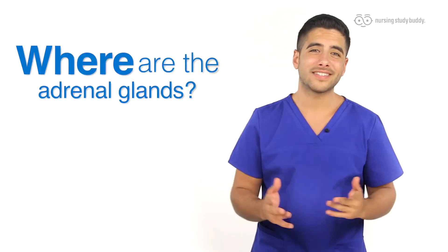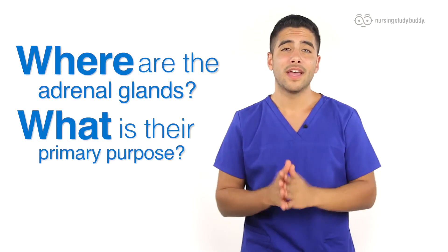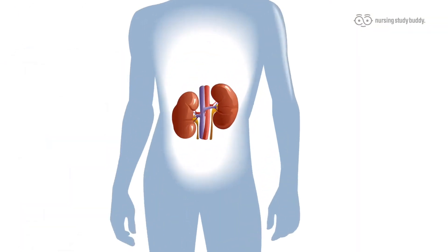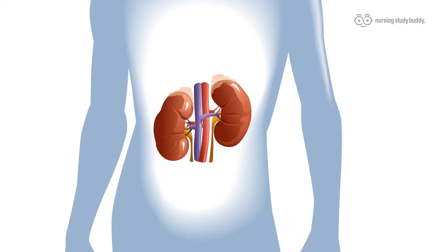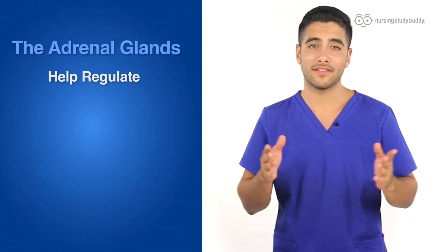Where are the adrenal glands and what is their primary purpose? The adrenal glands sit atop the kidneys. We have two — one on each side — and they are pyramid-shaped. They help the body regulate a whole lot of stuff.